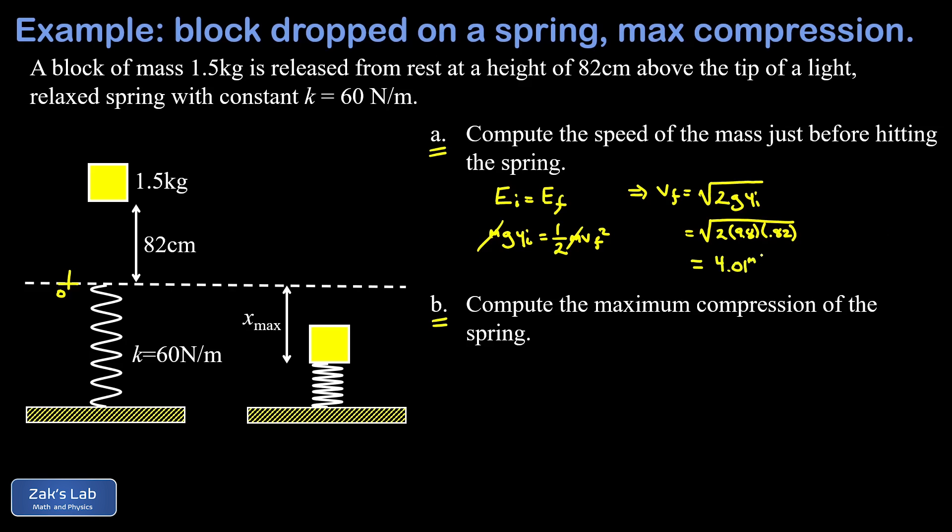So now in part b we want to find the maximum compression of the spring. The main physical point about the maximum compression is that v equals zero there. This is the turning point for the mass, so switching between moving down and moving up, that means it has to be momentarily stationary.